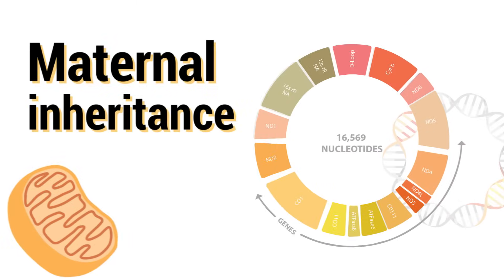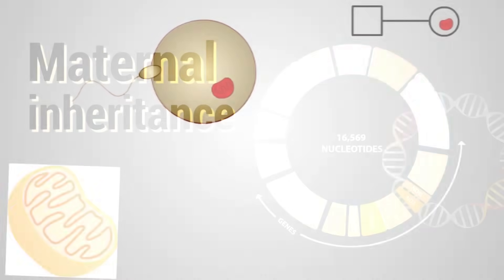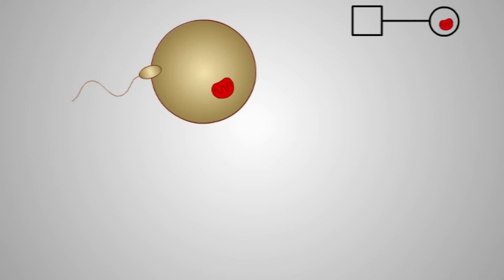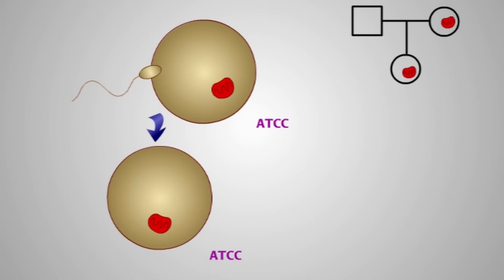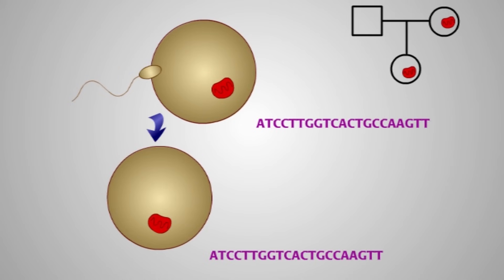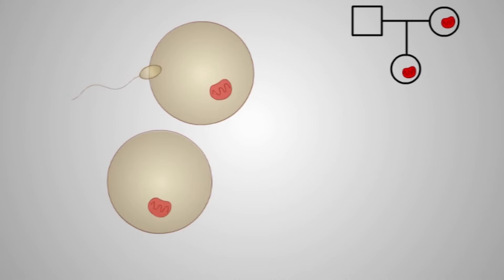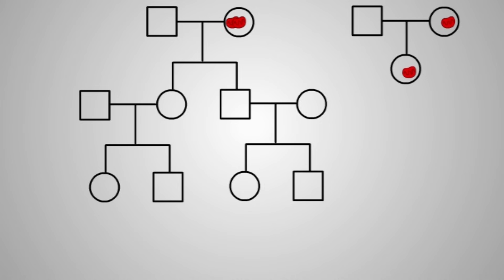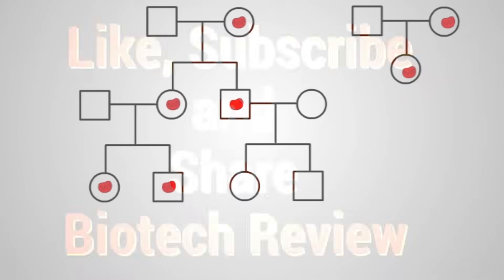When egg and sperm unite, the sperm's mitochondria are discarded. Mitochondrial DNA is therefore inherited only from the mother. Within a family, females from grandmother to mother to daughter all share identical mitochondrial DNA. Unlike DNA in the nucleus, mitochondrial DNA does not recombine with other chromosomes.